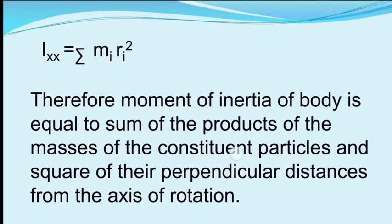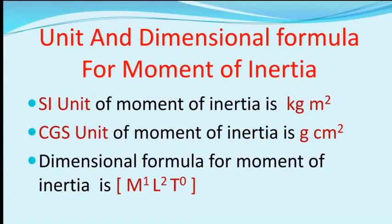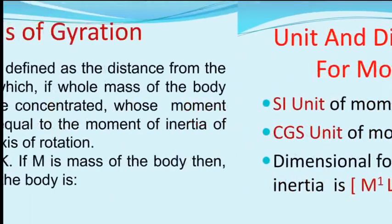The unit and dimensional formula for moment of inertia: since I = m·r², the SI unit is kilogram·meter² (kg·m²), the CGS unit is gram·centimeter² (g·cm²), and the dimensional formula is M¹L²T⁰.